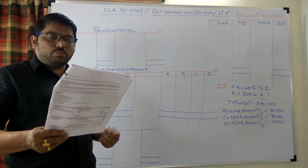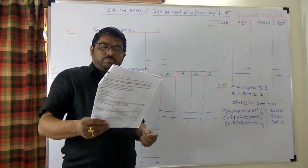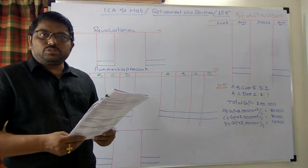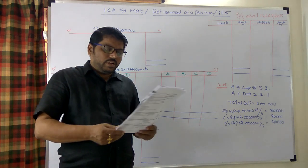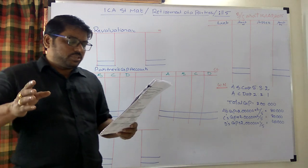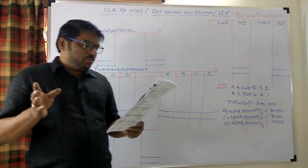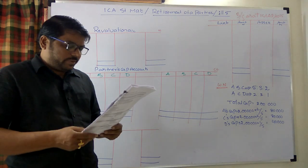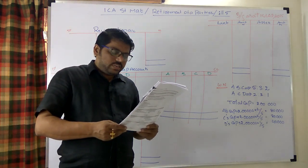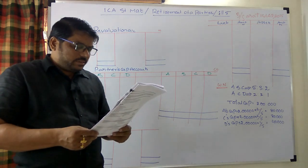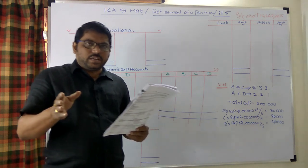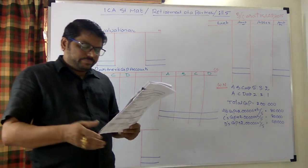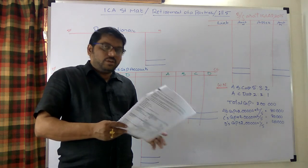Problem number 5: Double and Company is a partnership firm having partners A, B, and C sharing profits in the ratio of 10:6:4, which is nothing but 5:3:2. The balance sheet includes land, building, plant and machinery, furniture, investments, inventory, trade receivables, capitals of A, B, and C, reserves, long-term debt, bank overdraft, and trade payable. It was mutually agreed that B will retire from the partnership and D will be admitted as a new partner.